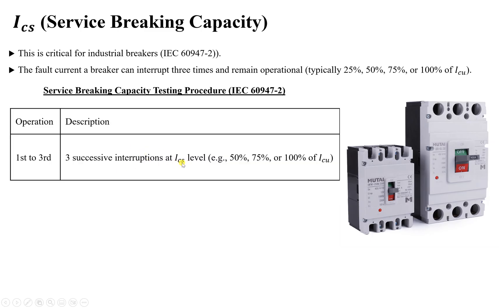To test ICS per IEC 60947-2, they perform three successive interruptions at ICS. They apply different fault levels — for example 50%, 75%, and 100% of ICU — depending on what the breaker is designed for. This gives three different faults to confirm the breaker is properly rated. This is the testing procedure used to certify compliance with IEC 60947-2.